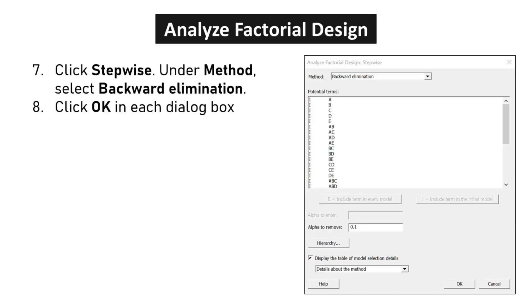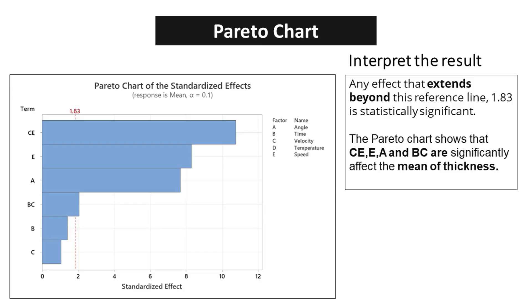Click Stepwise. Under Method, select Backward Elimination. Any effect that extends beyond this reference line, 1.83, is statistically significant. The Pareto chart shows that CE, EA, and BC significantly affect the mean of thickness.